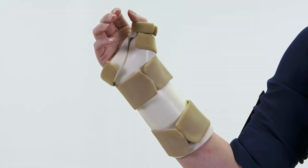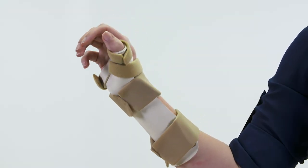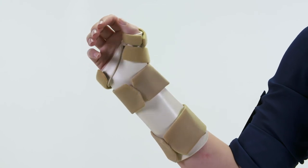Today, we're going to show you just how easy it is to create a forearm-based short thumb spica using Rolyan splint materials.